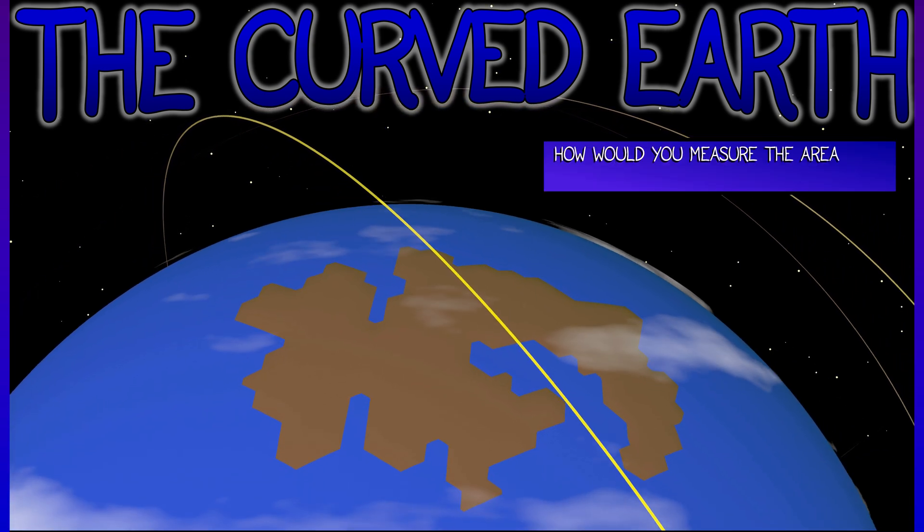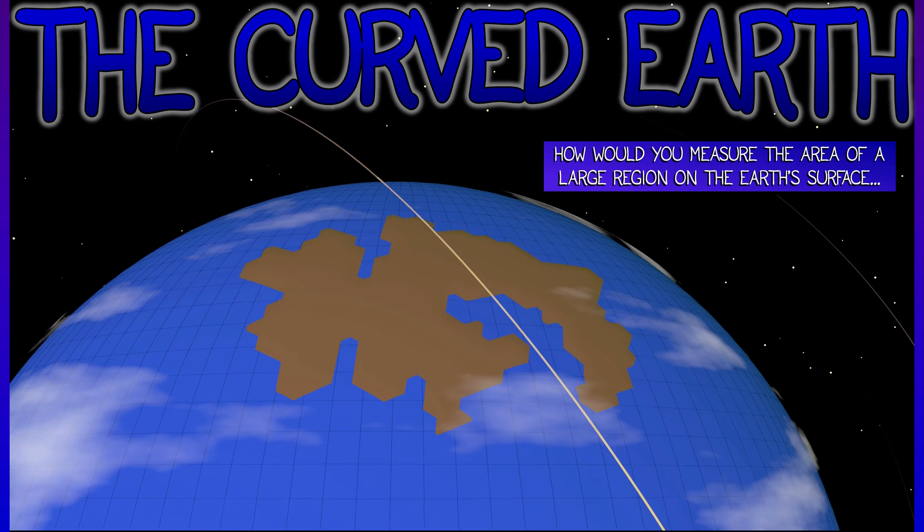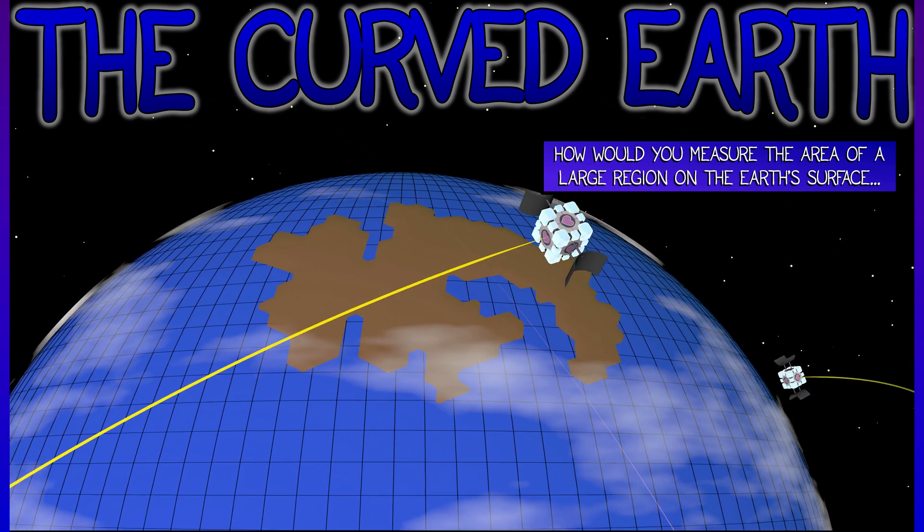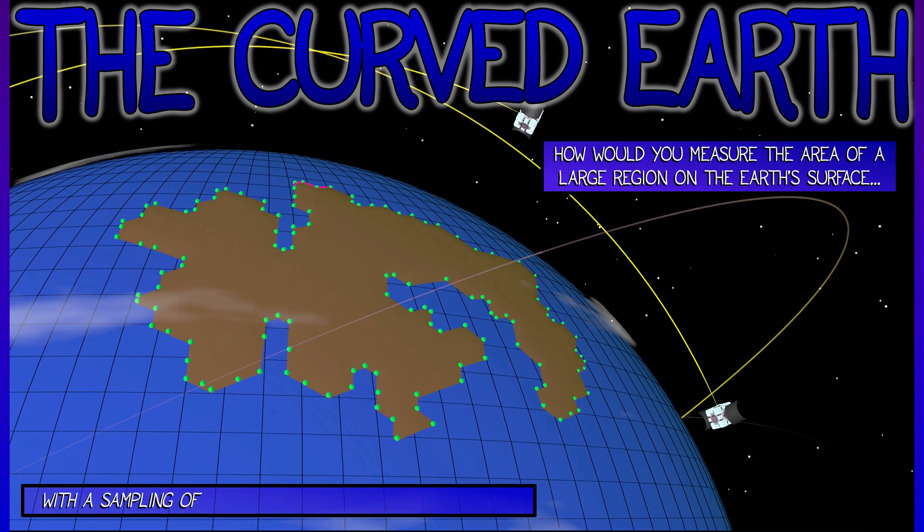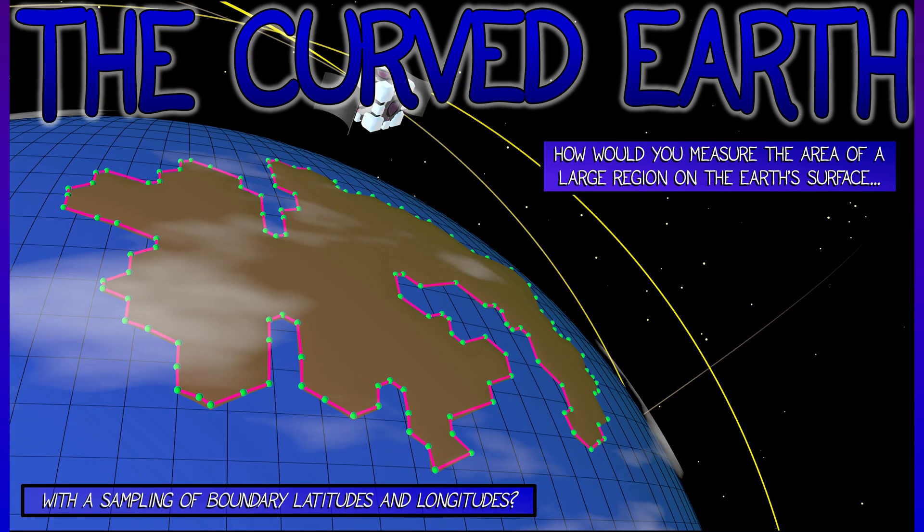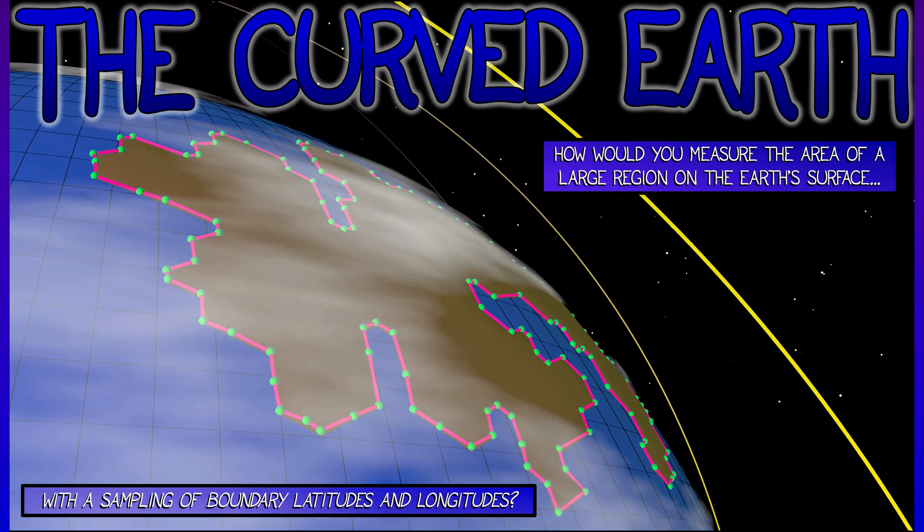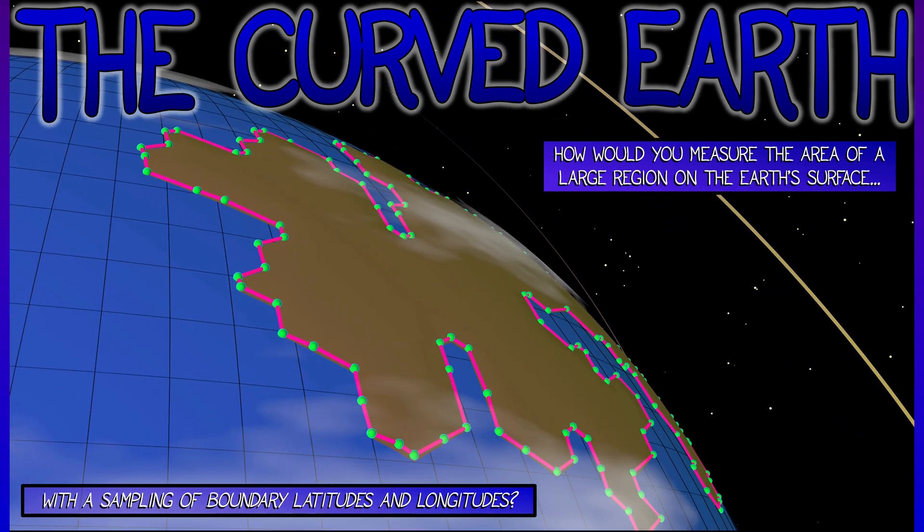Consider a really large region on the surface of the Earth, something like India or maybe even Texas. How would you estimate the surface area of that region, given a sequence of points on the boundary where you know the latitude and longitude?